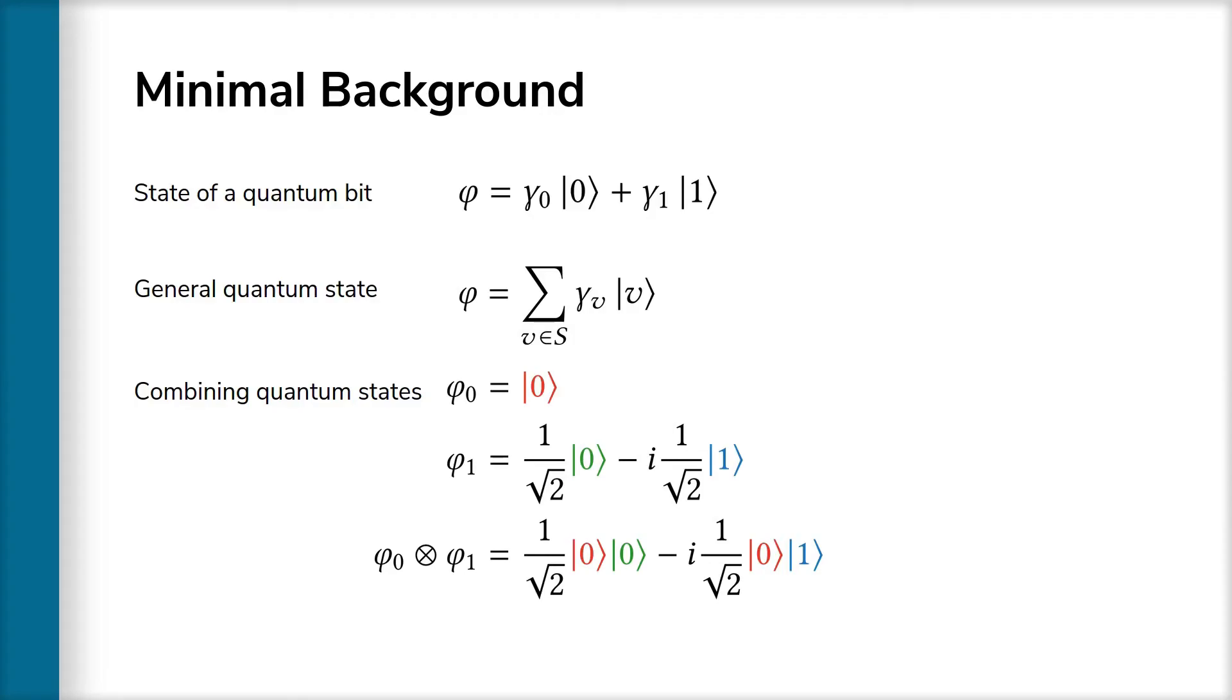An important quantum operation is measurement, which probabilistically collapses the state to one of multiple options. In this example, we measure the second qubit, which is a superposition of 0 in green and 1 in blue. After measurement, the second qubit collapses to either 0 or 1, which implicitly also collapses the first qubit.